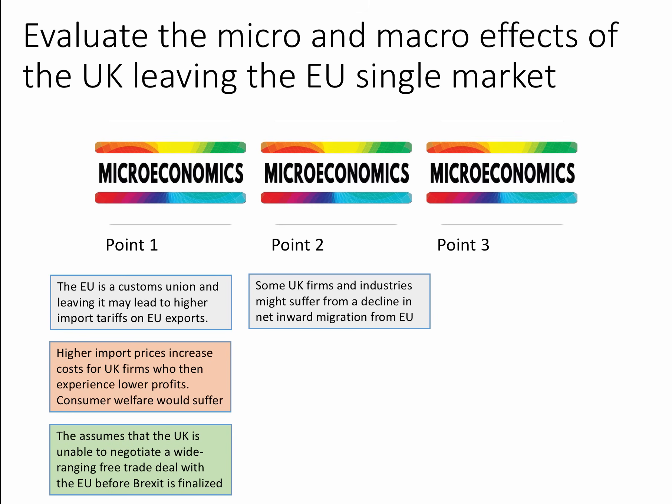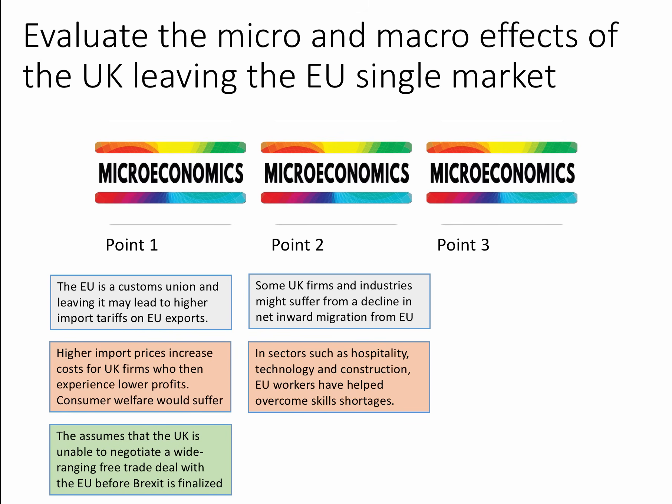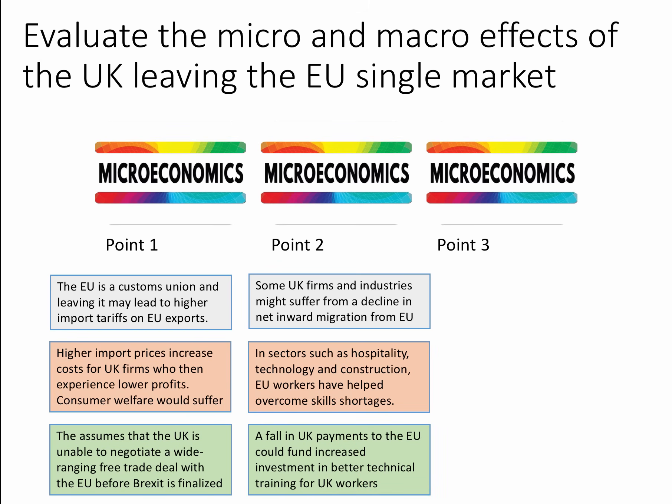Point two: some UK firms and industries might suffer from a decline in net inward migration from the European Union. This is a microeconomic point, focusing on particular firms and industries. In sectors such as hospitality, technology, and construction, EU workers have helped overcome skill shortages. You could develop the analysis to talk about the impact on wage inflation and the importance of seasonal workers, for example in the farming sector. However, a fall in UK payments to the EU — around £8 to £10 billion a year — could release funds to increase investment in better technical training for UK workers, helping to replace the reduction in migrant workers.